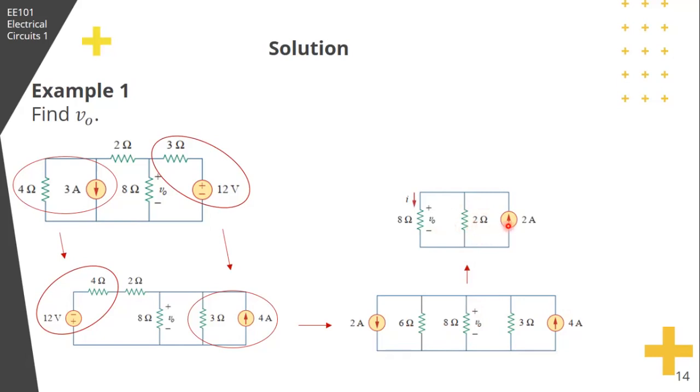So just by using current division, we can solve this. The current I going through here is 0.4 A, so VO is just 8I. So we have VO equal to 3.2 volts.